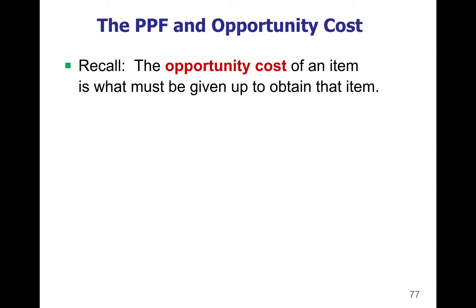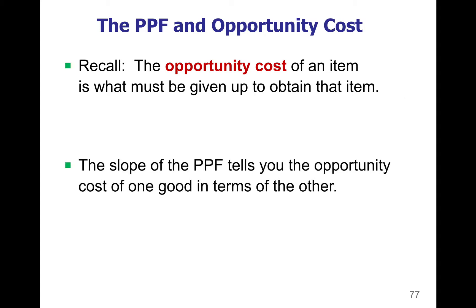If you're looking at a production possibility frontier, as you move away from producing one item in order to produce more of the second item, you are producing opportunity cost. So the slope of the production possibility frontier tells us the opportunity cost of one good in terms of a second good.